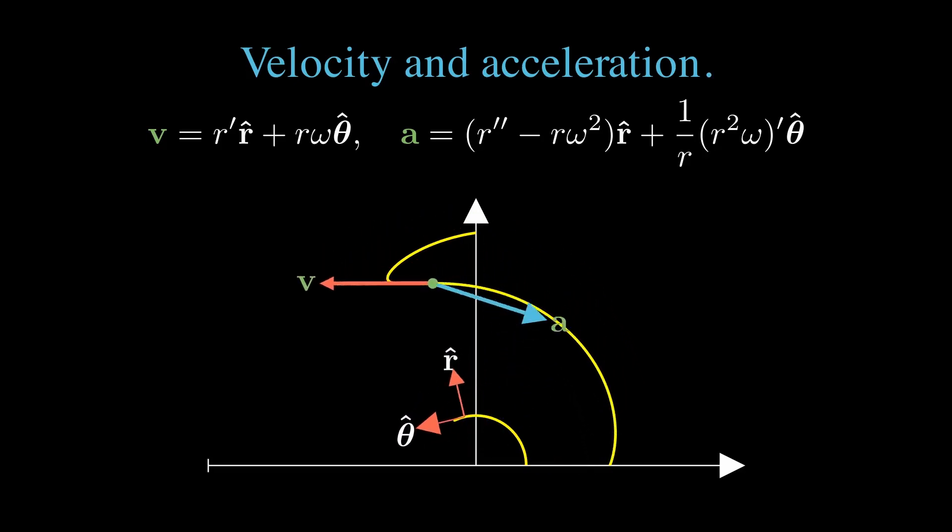For the velocity, we have just the right superposition of r hat and theta hat components so that the velocity lies always tangent to the curve.